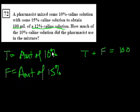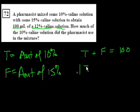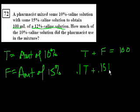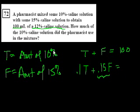How much saline are we going to end up with? The 10% saline solution contributes 10% of T as saline, plus 15% times F — the amount of the 15% saline solution. That equals the total saline in the mixture. Since we end up with 100 milliliters of 12% saline solution, 12% of 100 milliliters is saline, so that equals 12 milliliters.